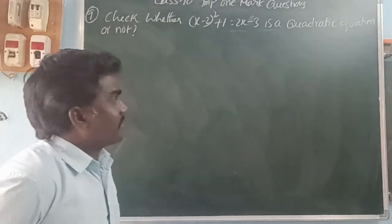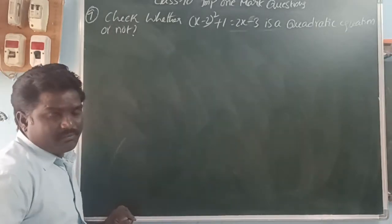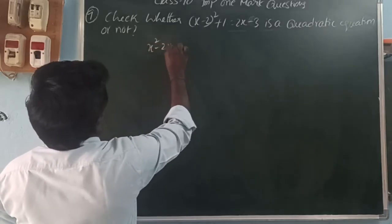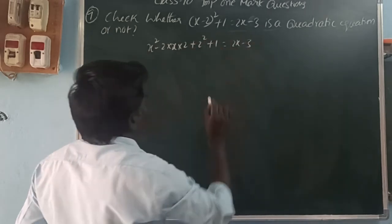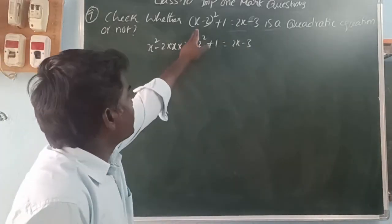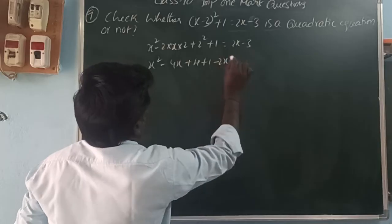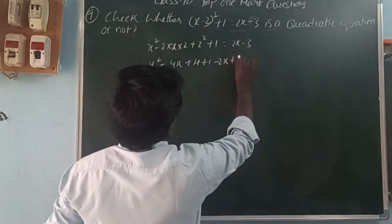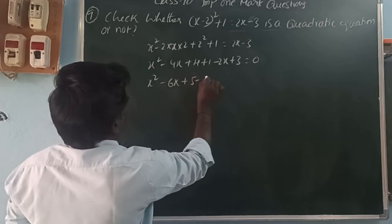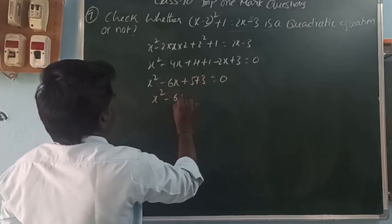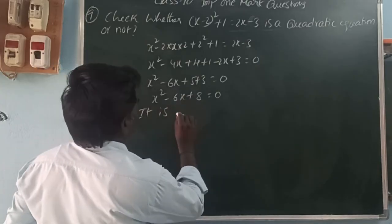Check whether (x minus 2) squared plus 1 equals x minus 3 is a quadratic equation. Expanding using (a minus b) squared equals a squared minus 2ab plus b squared: x squared minus 4x plus 4 plus 1 equals x minus 3. Rearranging: x squared minus 6x plus 8 equals 0. The degree is 2, therefore it is a quadratic equation.